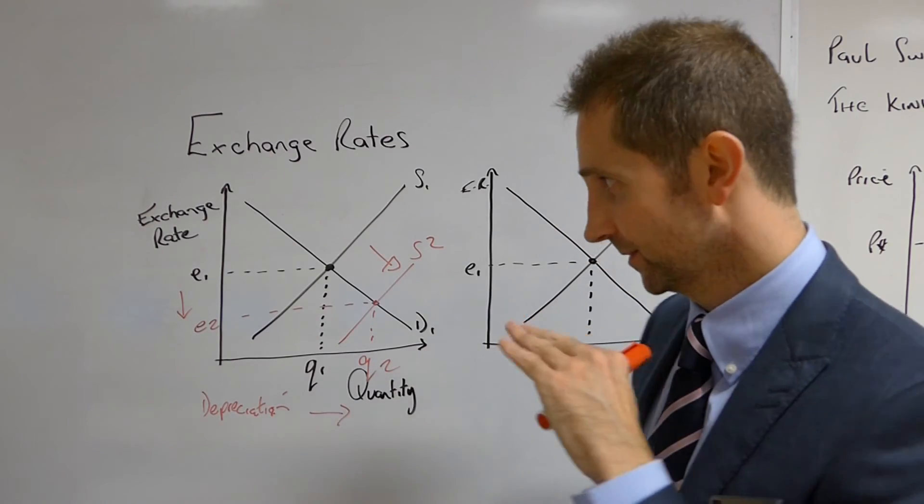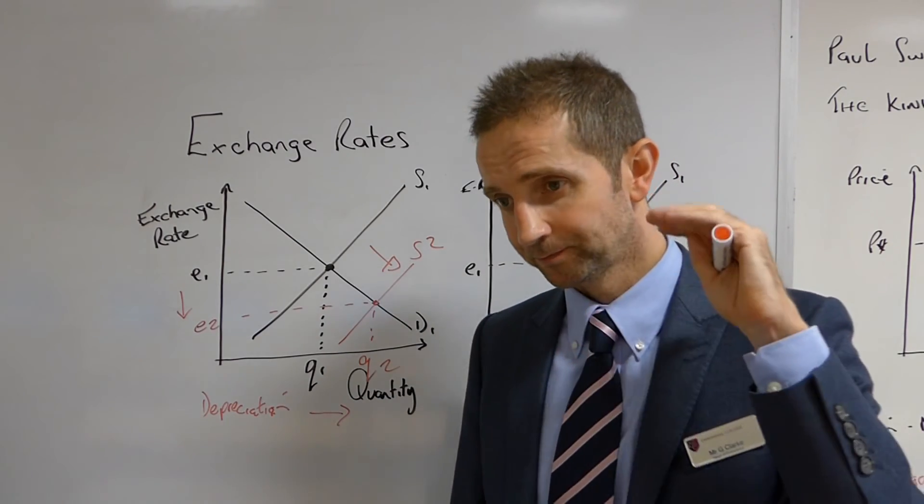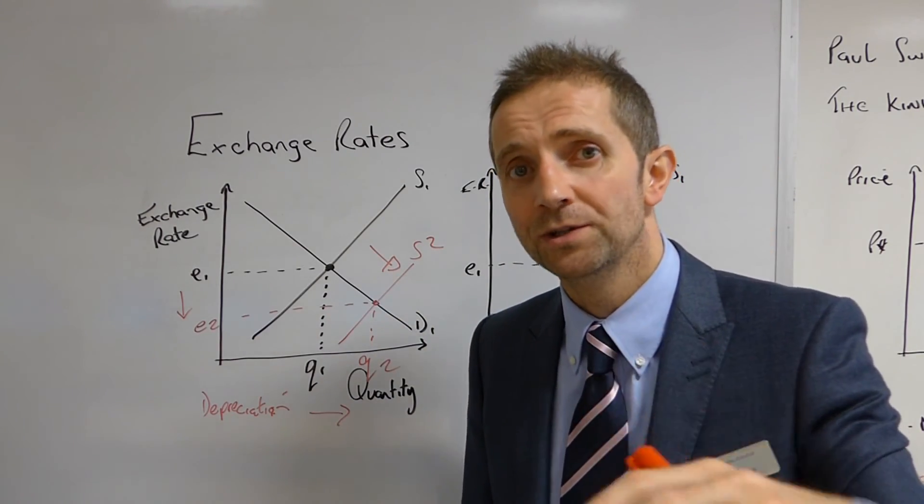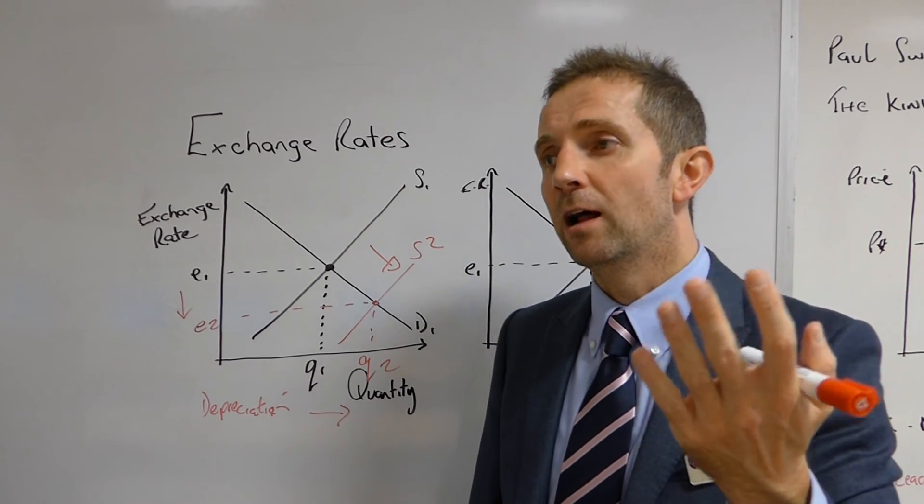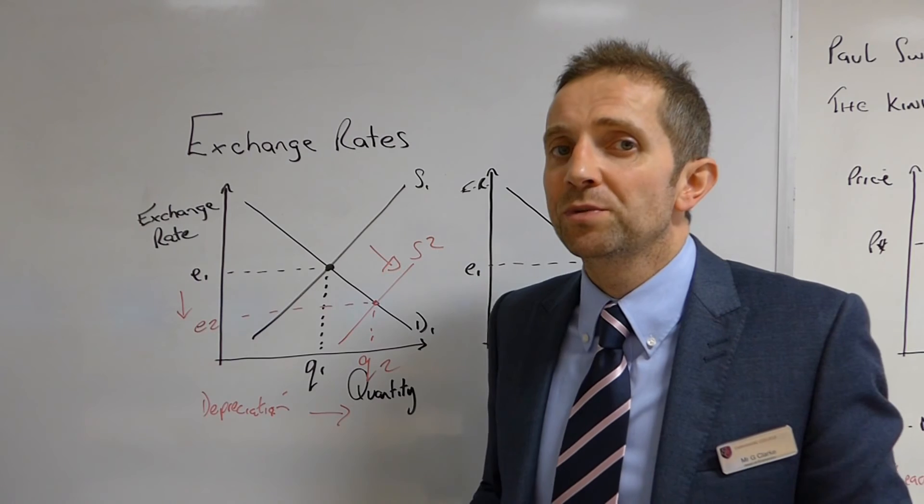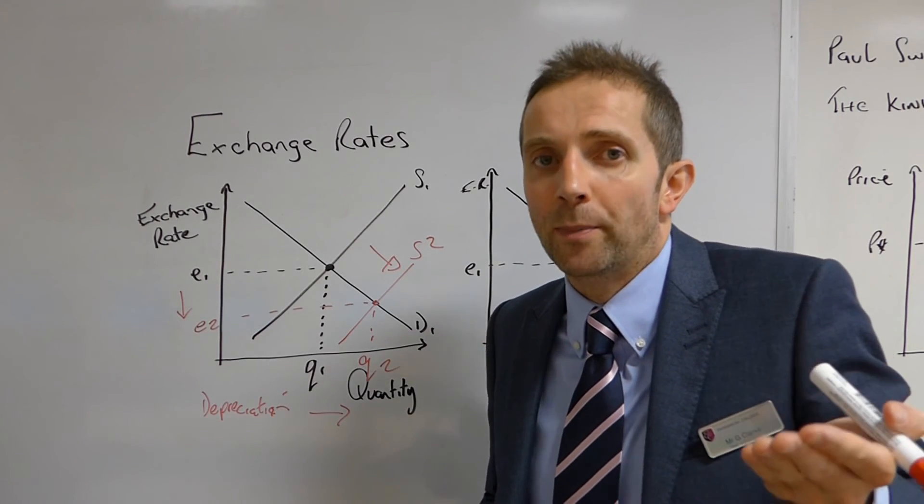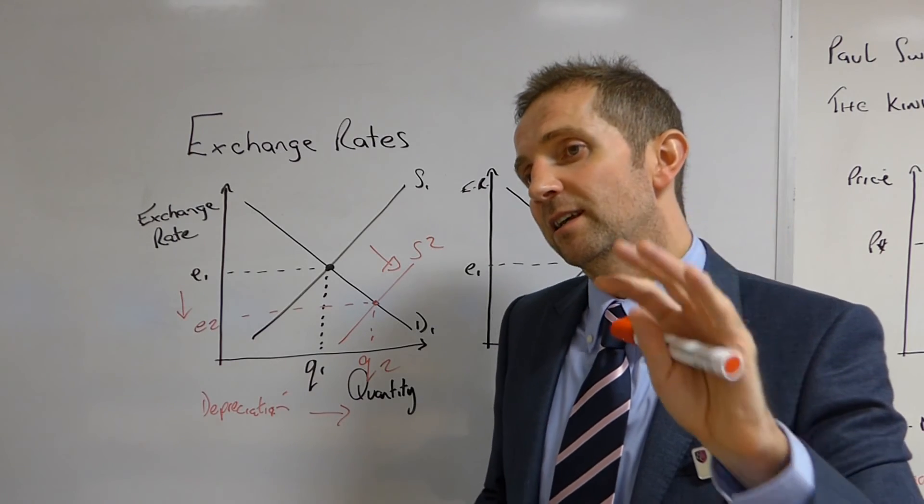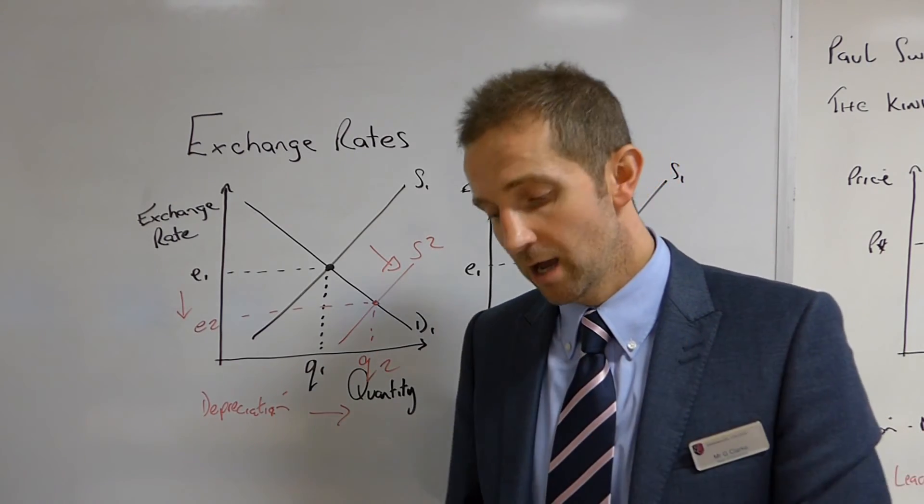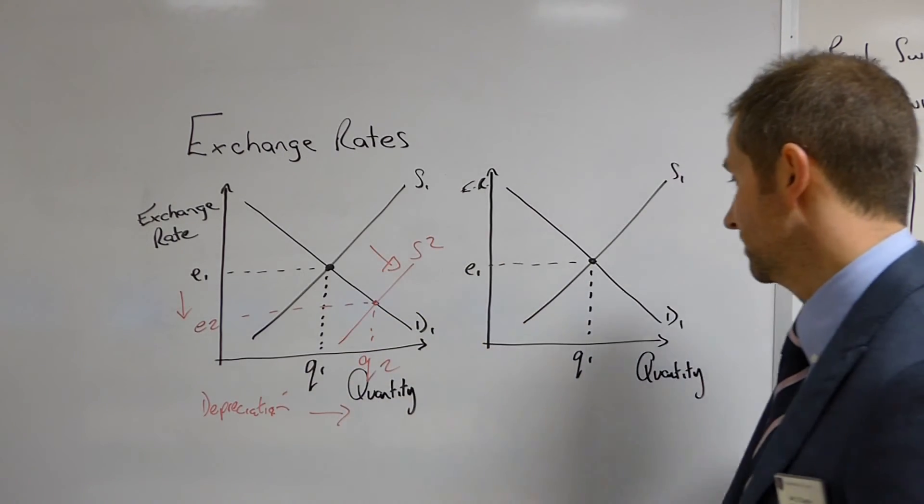And Stiglitz argues that actually what ought to have happened was that Germany, because their economy was doing relatively well, they should have let wages and prices in their economy come up. Now that of course would have made the German economy slightly less competitive, and so if we refer back to this, the demand then for German goods and services would have fallen.